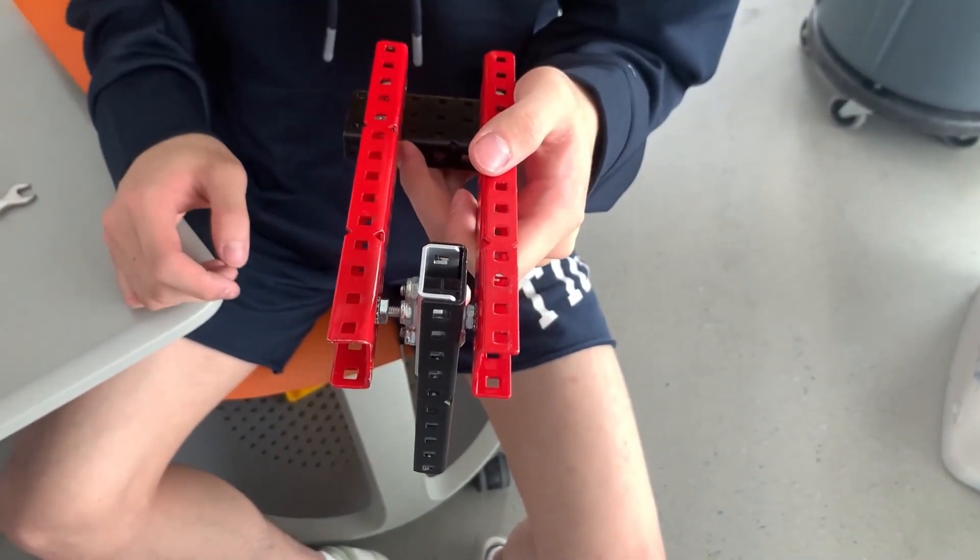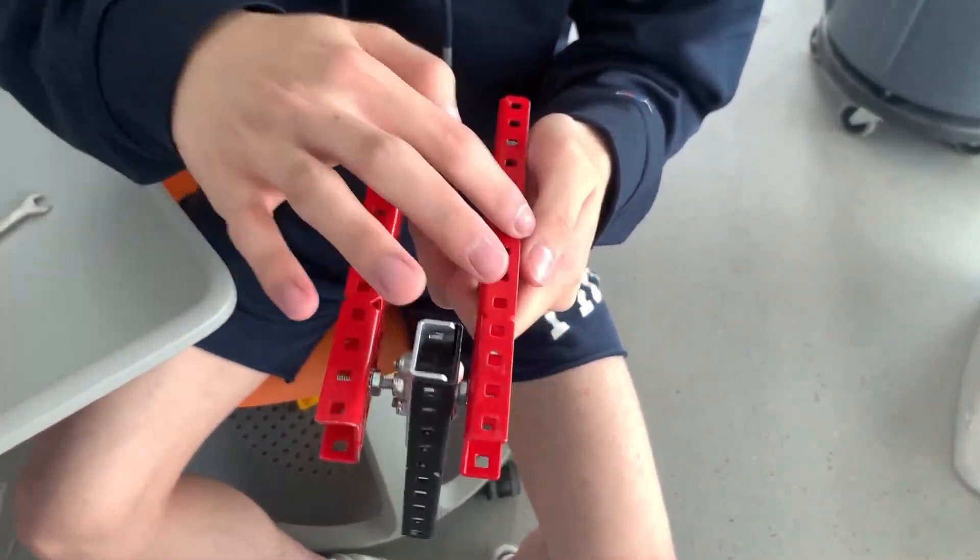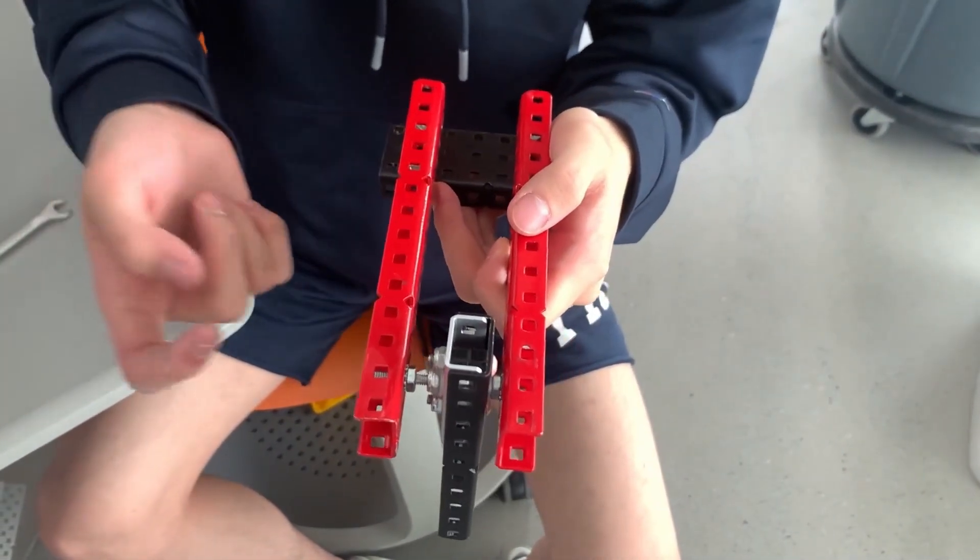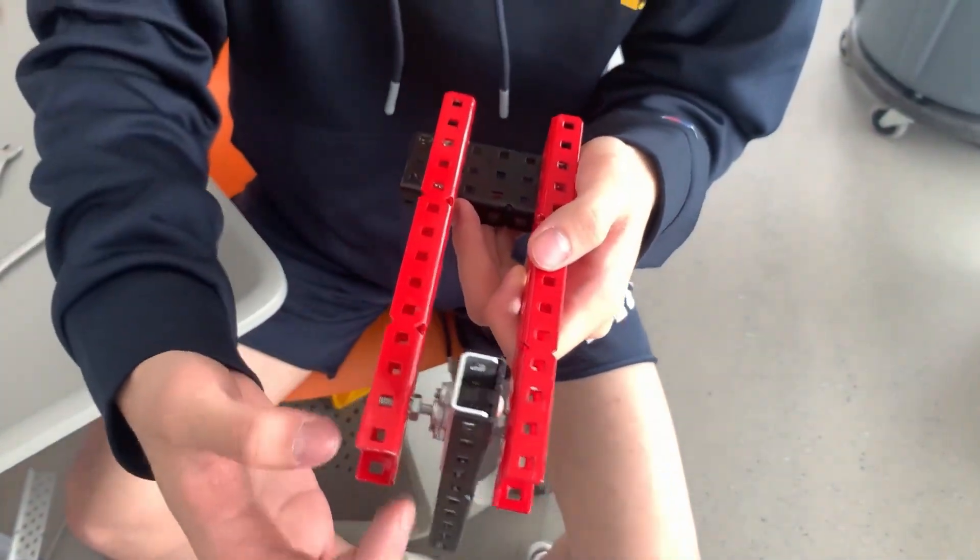Let's say you're doing a drivetrain, and you don't really have a lot of space to screw in your two C-channels. Then you can basically use the screw joint as a way to add support.